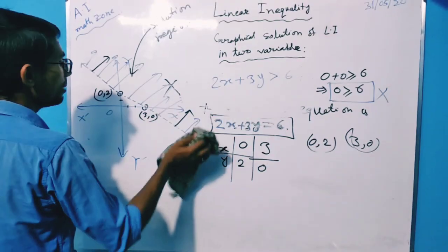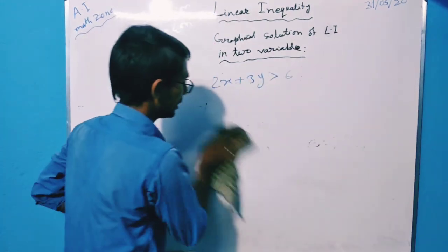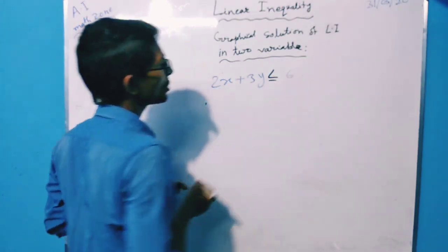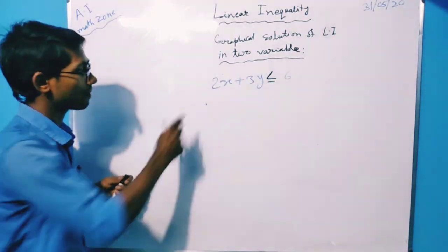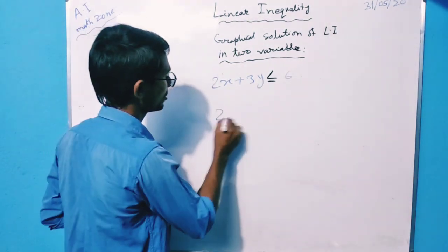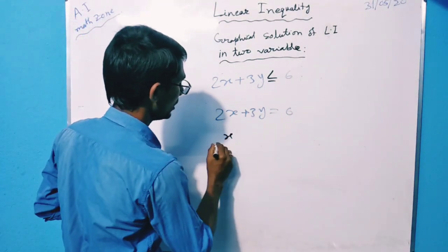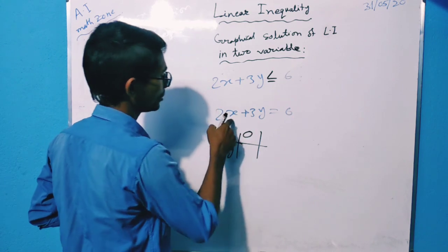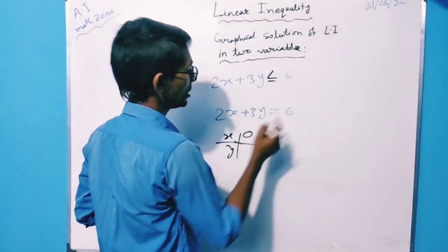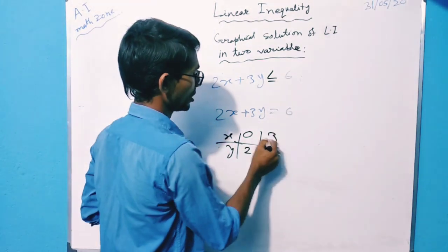Now, if the same linear inequality is given but the inequality sign is changed — suppose it is 2x plus 3y less than or equals to 6 — then what will be the solution region? The equivalent equation of this linear inequality is 2x plus 3y equals 6. Same as before: if we put x equals 0, the value of y will be 6 divided by 3, which is 2. And if we take the value of y as 0, then the value of x will be 3.